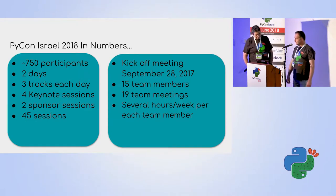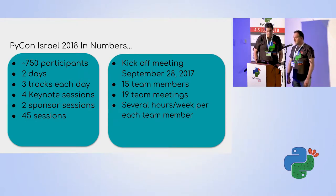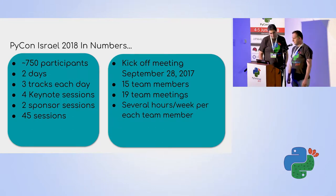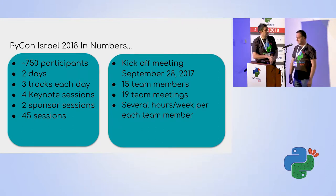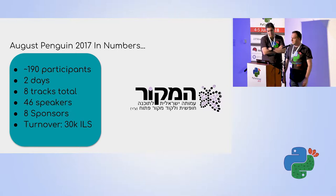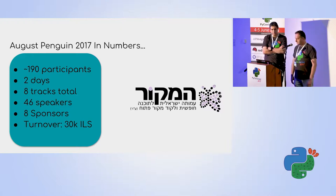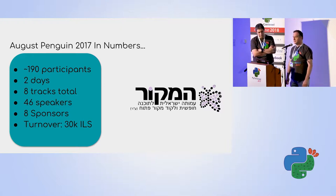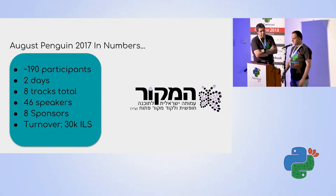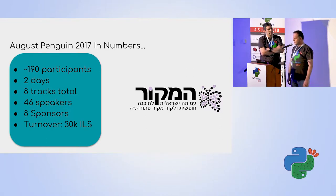We had three tracks, including a PyData track. Altogether we had more than 50 sessions here, and this was all enabled by a month of hard work by many good people. These are the numbers for last year's August Penguin — the main conference of HAMACO, the Open Source Association that's also behind this conference. You can just see the numbers and imagine how many people it takes to have a meaningful community event.